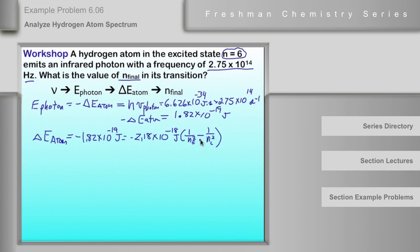So what we want to do is to plug in n initial right here. This would be 6. So we would square 6 and so forth. And if we look at this, in order to solve this expression, it's going to be negative 1.82 times 10 to the negative 19 joules, and that's going to be equal to 1 over n squared final minus 1 over 6 squared.